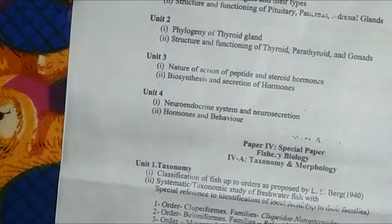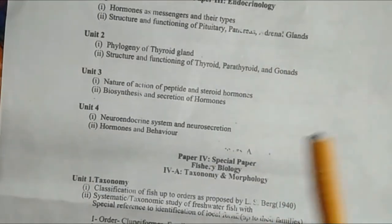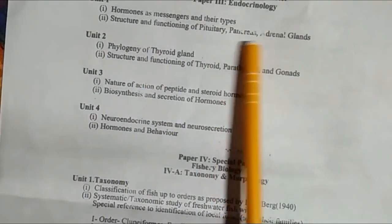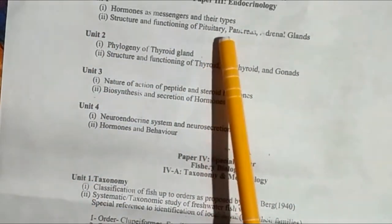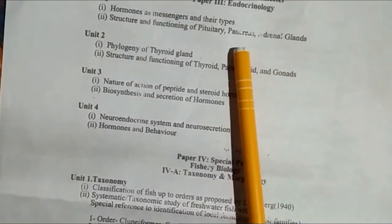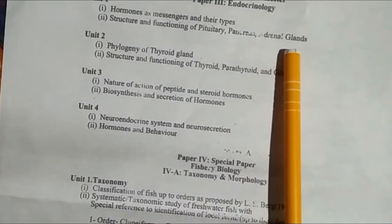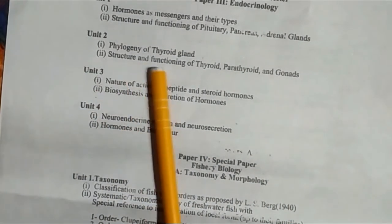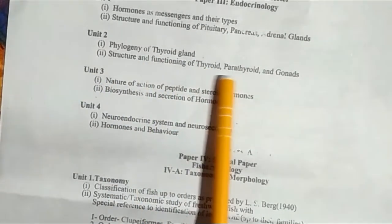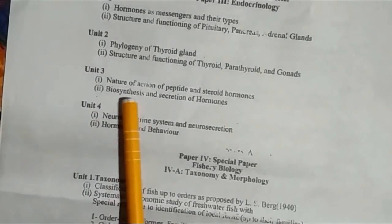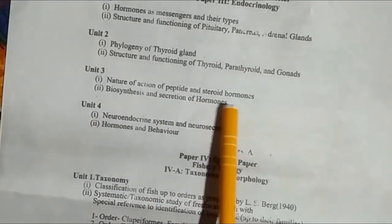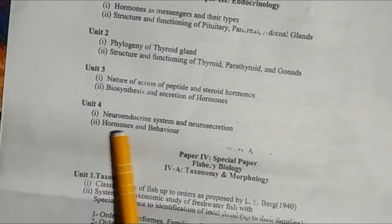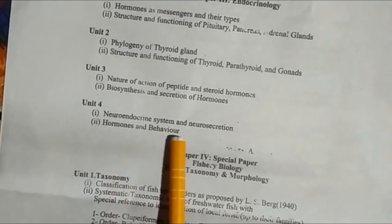Paper Third is Endocrinology. Unit First covers hormones as messengers and their types, and the structure and functioning of the pituitary, pancreas, and adrenal glands. Unit Second covers the phylogeny, structure and functioning of the thyroid, parathyroid, and gonads. Unit Third is the nature of action of peptide and steroid hormones — biosynthesis and secretion. Unit Fourth is the neuroendocrine system, neurosecretion, hormones and behavior.